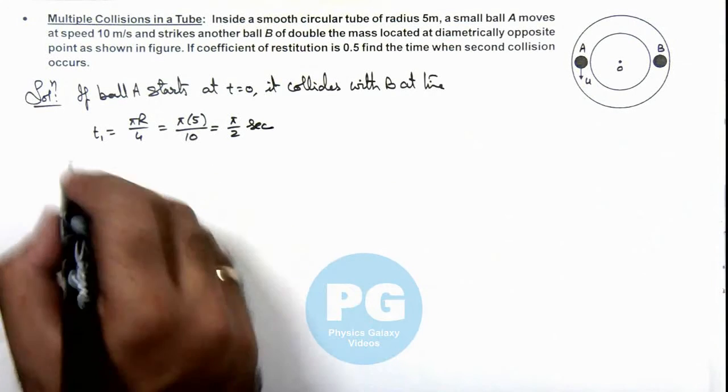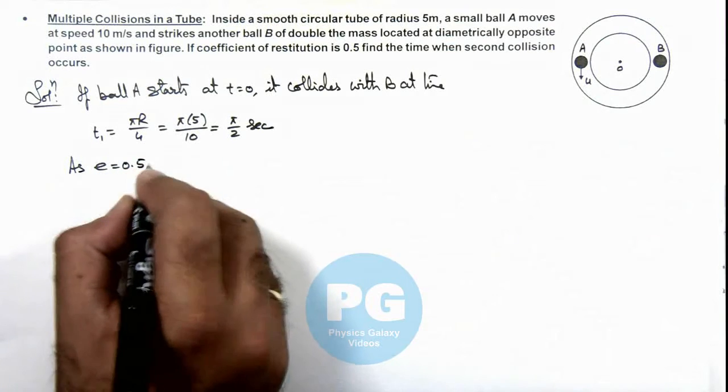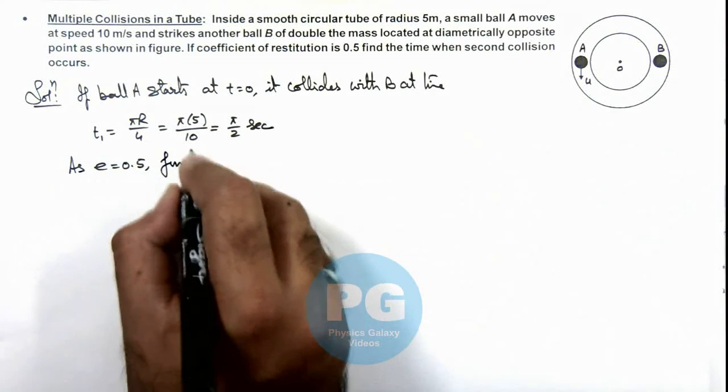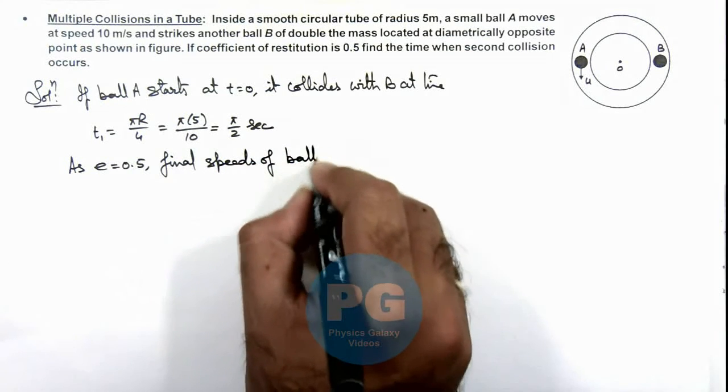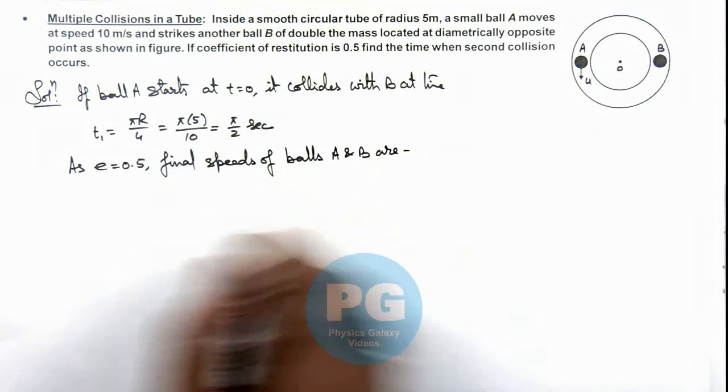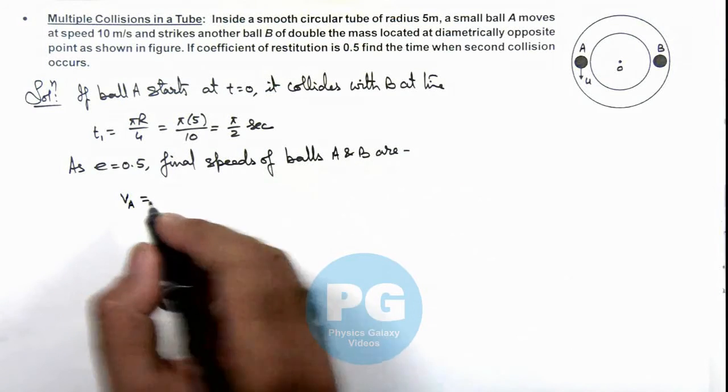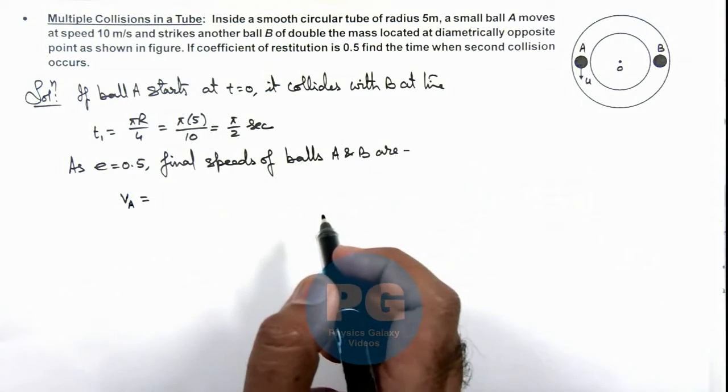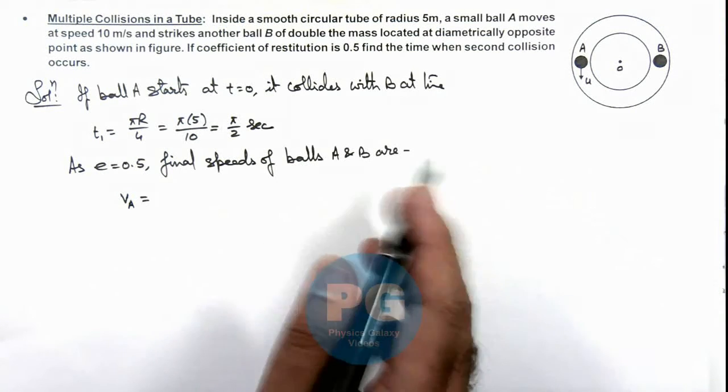As e equals 0.5, we can find the final speeds of balls A and B. We can calculate the final velocity of ball A using the expression we already discussed for the expression of speeds for head-on partially elastic collision.